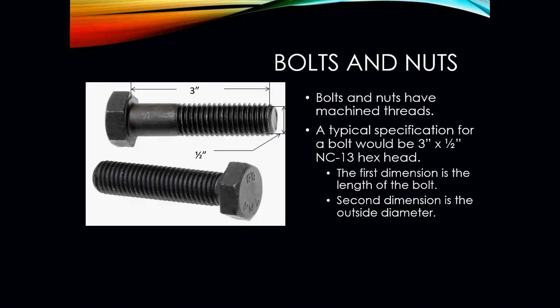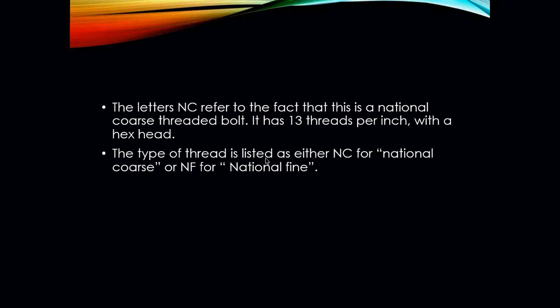Nuts and bolts have machine threads. A typical specification of a bolt would be a 3-inch by 1.5-inch hex head — the first dimension is the length of the bolt and the second dimension is the outside diameter. NC refers to the fact that it is a national coarse threaded bolt, with 13 threads per inch and a hex head. Another type of thread listed is either NC for national coarse or NF which means national fine.